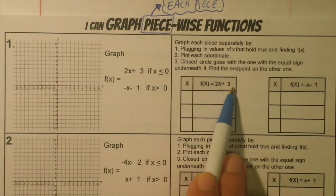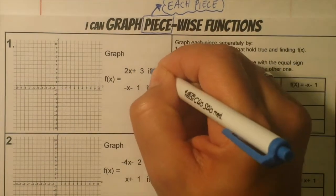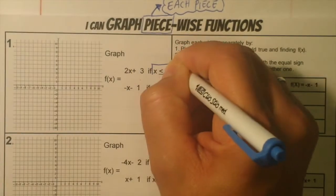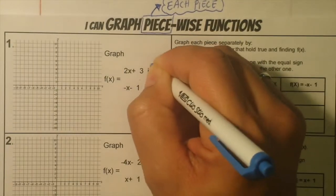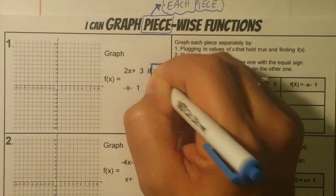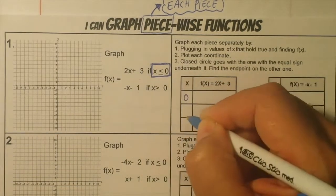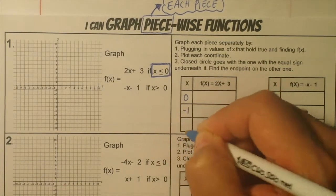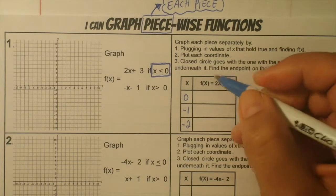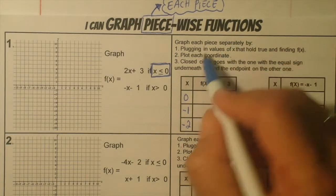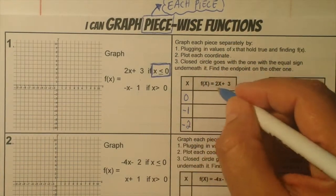The first function is 2x plus 3. The values need to be x is less than or equal to 0. So all the values that are less than and equal to 0 — what are those numbers? Well, 0 is going to be the first one, and then less than that is negative 1, negative 2, and so forth. You don't need that many points — 2 or 3 is enough. Then you're going to plug those in to the function.